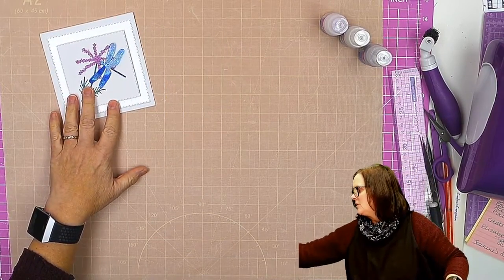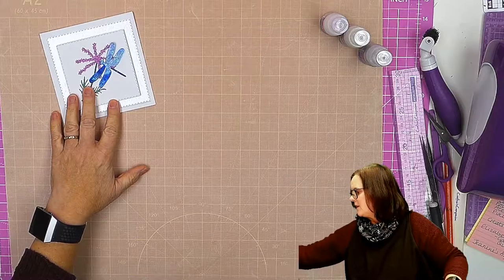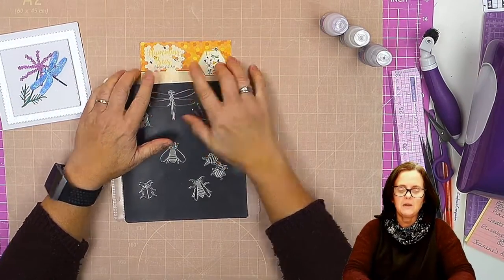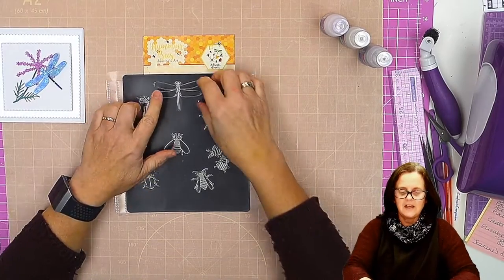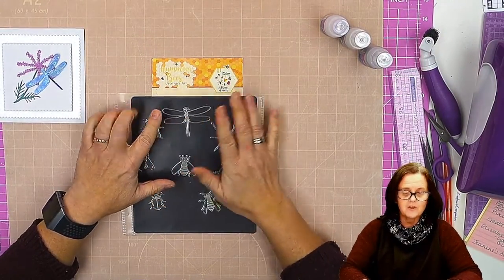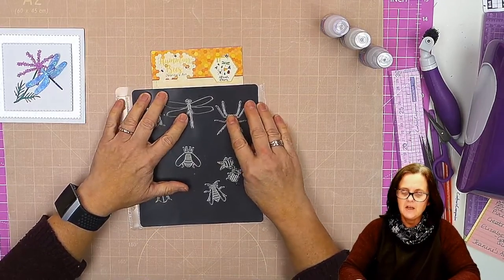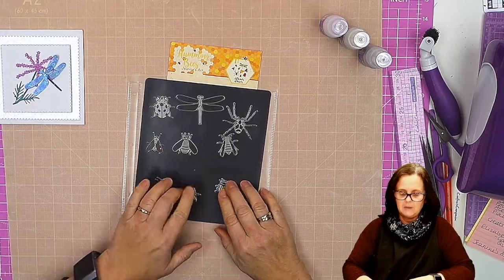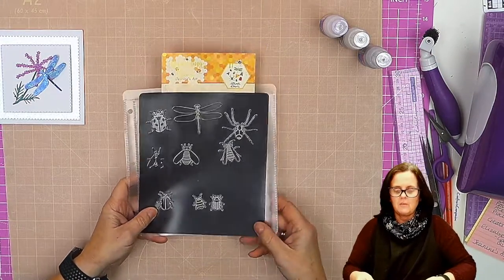We're going to use the dragonfly die from this set. This is the Janine's Art Humming Bees, all kinds of insects. There are also in this set a ladybird, spider, fly, bee, wasp, and some little beetles, so lots of different things you can make with those.